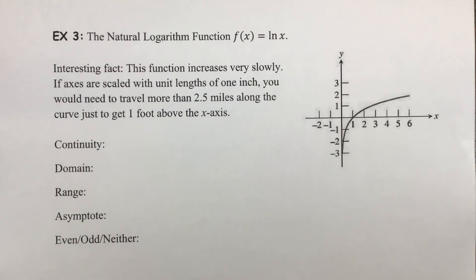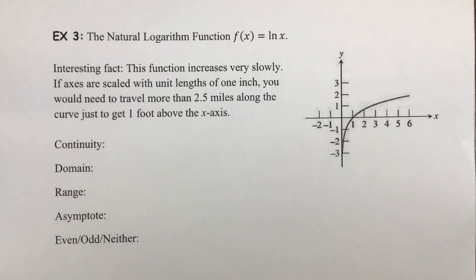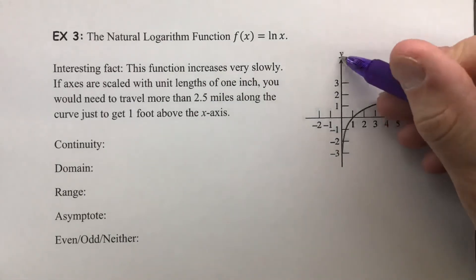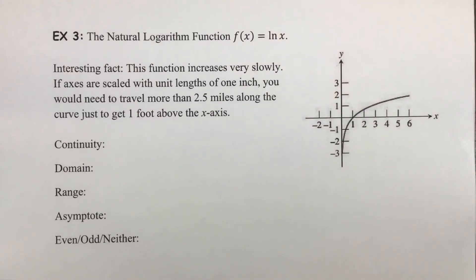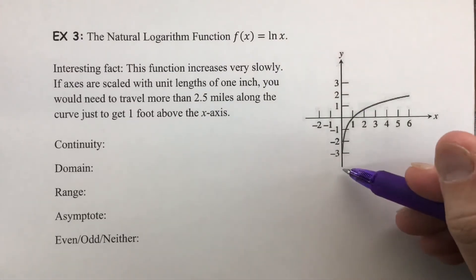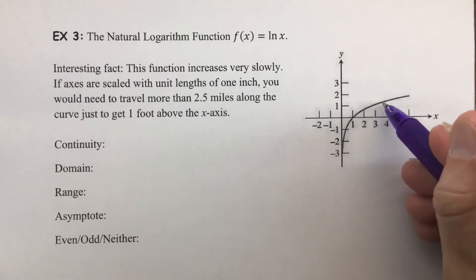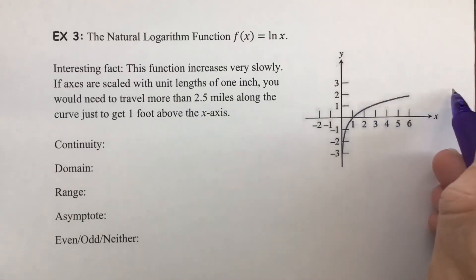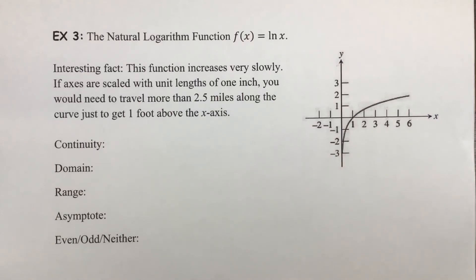The natural logarithm function is f(x) = ln(x). It is the inverse function of f(x) = eˣ. Because it is an inverse, it has an asymptote along the y-axis rather than the x-axis. As you move away from that asymptote to the right, the graph appears to have a horizontal asymptote, but it does not — it continues climbing upward, just very slowly.